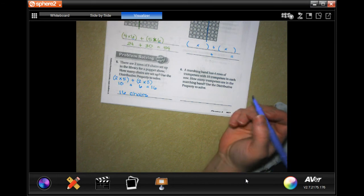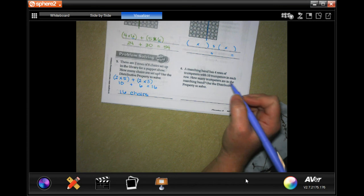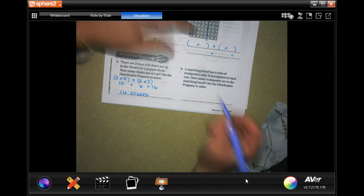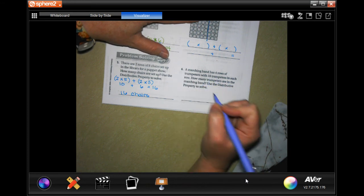Do another one. A marching band has four rows of trumpeters with 10 trumpeters in each row. How many trumpeters are in the marching band? Use the distributive property. So instead of four times ten, I'm going to do four times five and four times five twice.